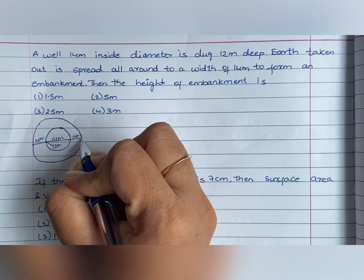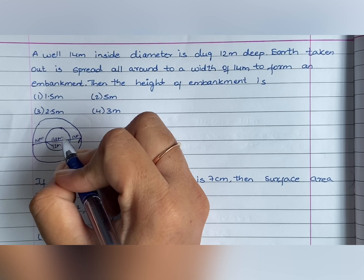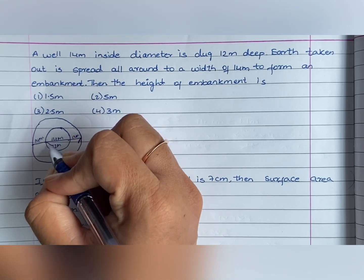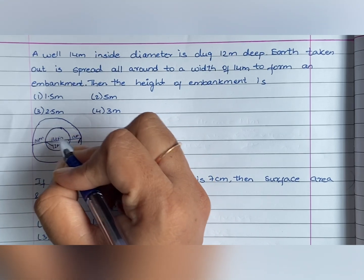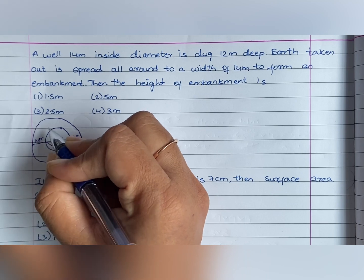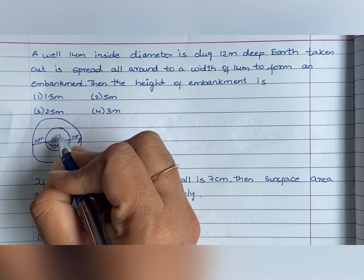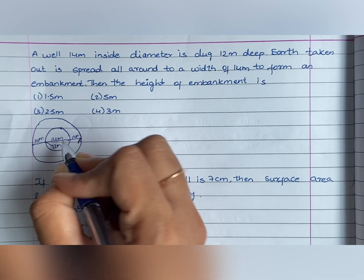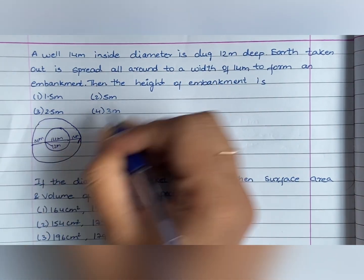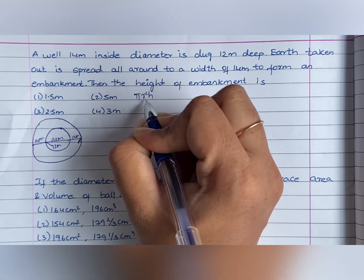So, the height of the embankment is the height. First, we will tell you, how much is the embankment? This volume will be equal to this volume. So, first, this volume is equal to this volume. Well is cylinder shape. So, volume of this well is pi r square h.